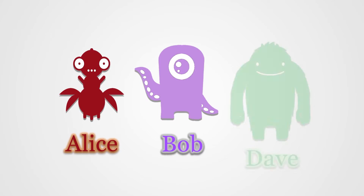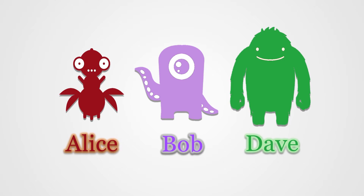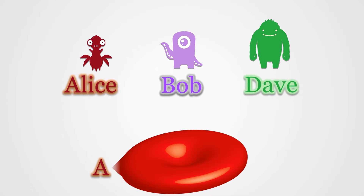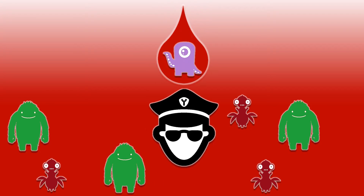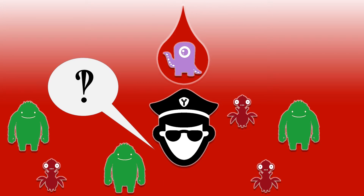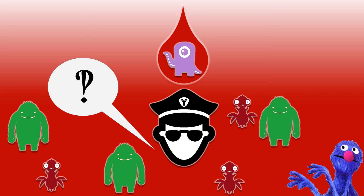Alright, meet Alice, Bob, and Dave. They're these antigen things you can have on your blood cells, but let's keep thinking of them as little monsters. You can't take blood with a monster in it who you aren't already used to. Your antibodies will go defend you from these unknown but otherwise friendly monsters.